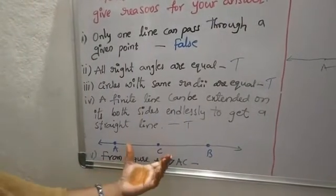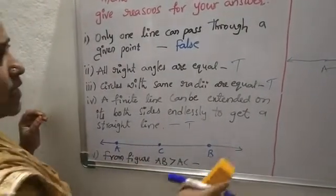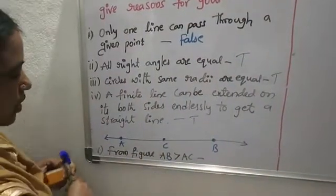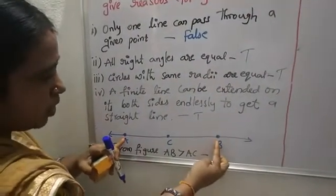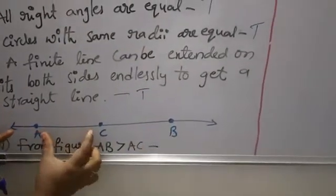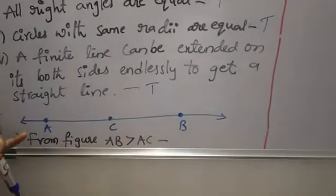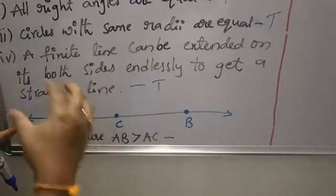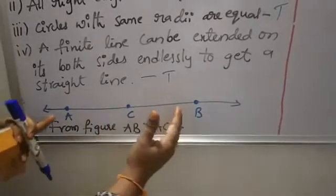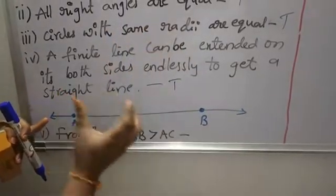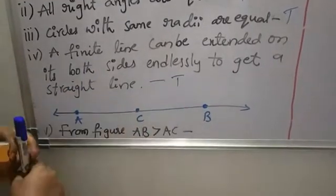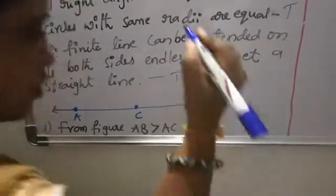Now the last one: from the figure, is AB greater than AC? AB is the total line, and AC is some small part of AB. From Euclid's axiom, the whole is always greater than the part. So AB is the whole and AC is the smaller part — therefore AB is greater than AC. Obviously true.